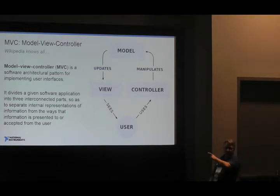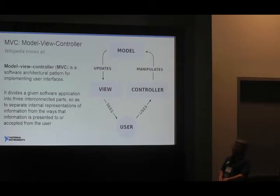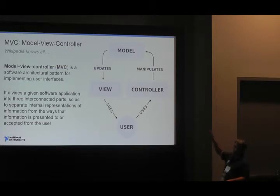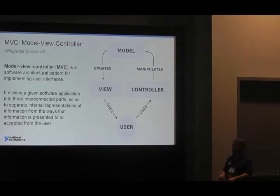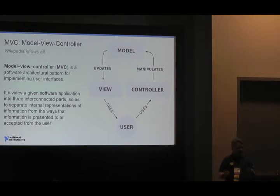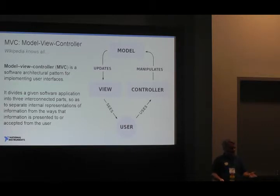Model View Controller: Wikipedia says there are three parts — a model, a view, and a controller. The user interface interacts with the controller. The controller changes the model. The model updates the view, which displays to the user. The idea is that by dividing these into three interconnected parts, it separates internal representations and responsibilities in your program, decoupling your software by definition. There have been a number of talks at CLA Summit and NI Week about how people took this idea and did something with it.